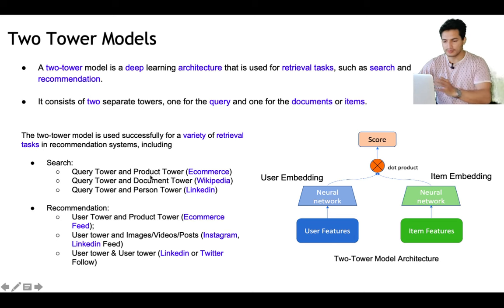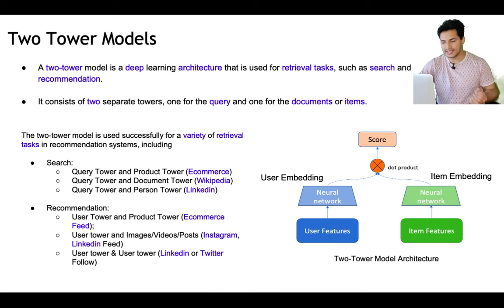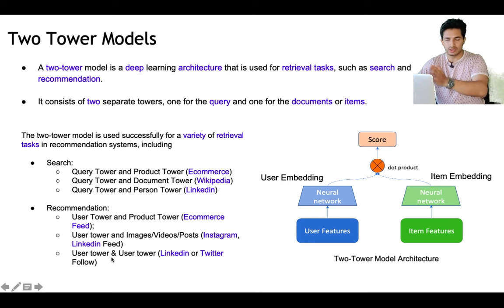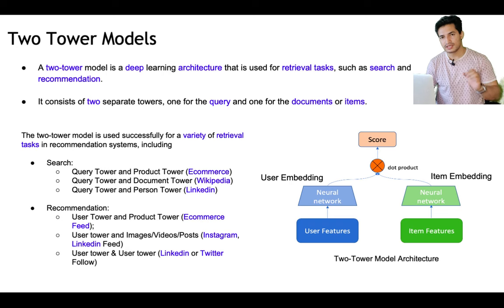There are also recommendation two-tower architectures used for retrieval in website recommendation systems where the two towers can be user and product — for a given user, which are the relevant products. It can be user and images or videos, as in Instagram, where each user gets a personalized feed. It can also be user and user, for example in LinkedIn or Twitter, to suggest which other users to follow. That's why two-tower architectures are very popular — they're neural-network-based, learn embeddings, and are very scalable.